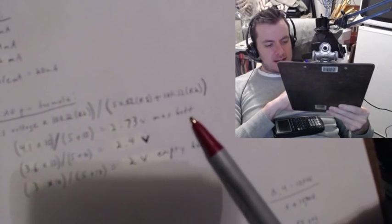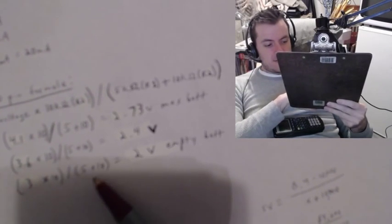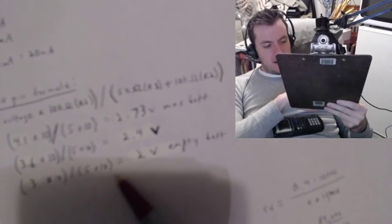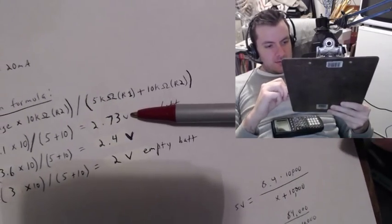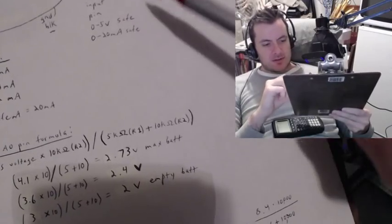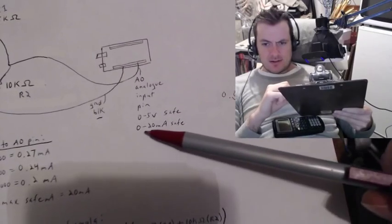That's when the battery is at its max. The analog input pin will be getting 2.73 volts. And then, at nominal or normal voltage, it's 3.6 times 10, divided by 5, plus 10. So, that's 36, divided by 15, which is 2.4 volts. And then, you've got, when the battery is pretty much empty, 3 times 10, divided by 5, plus 10. So, that's 30, divided by 15, which is 2 volts at an empty bat. And if it's between 2 volts and 2.73 volts, it is well within the safe range of 0 to 5 volts for the Arduino analog input pin. 0 to 5 is safe, and 0 to 20 milliamps is safe.